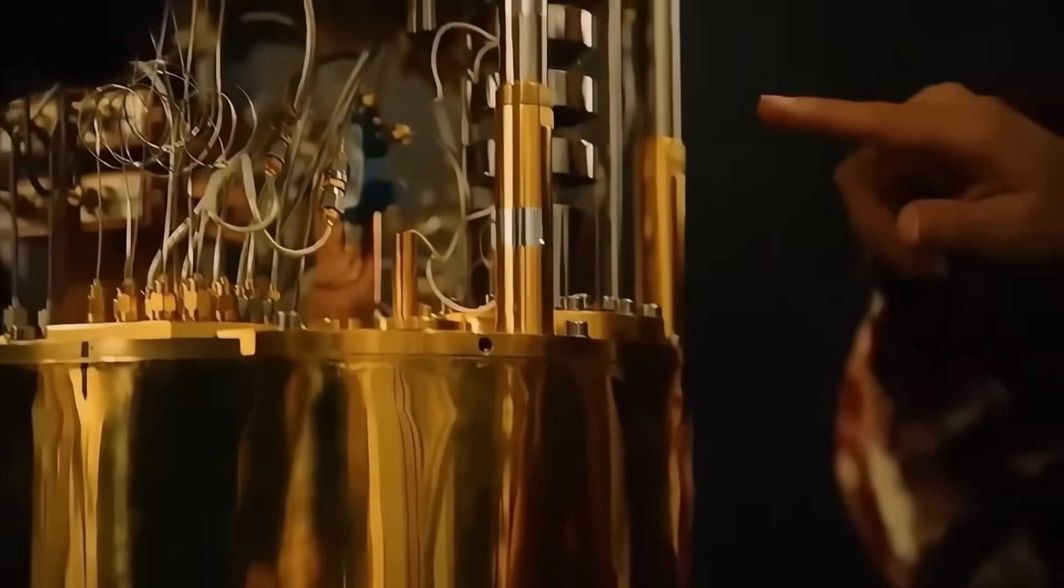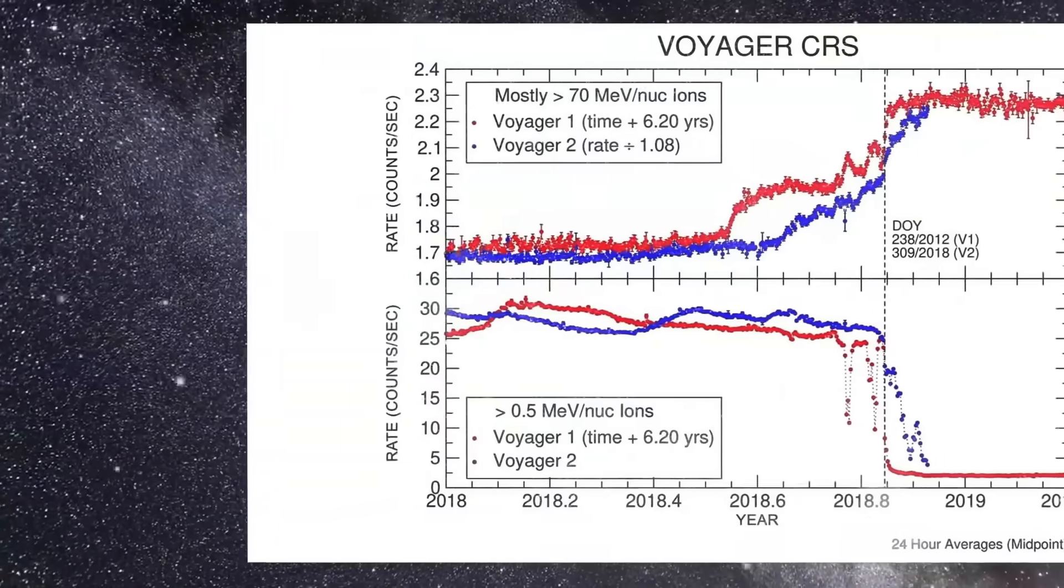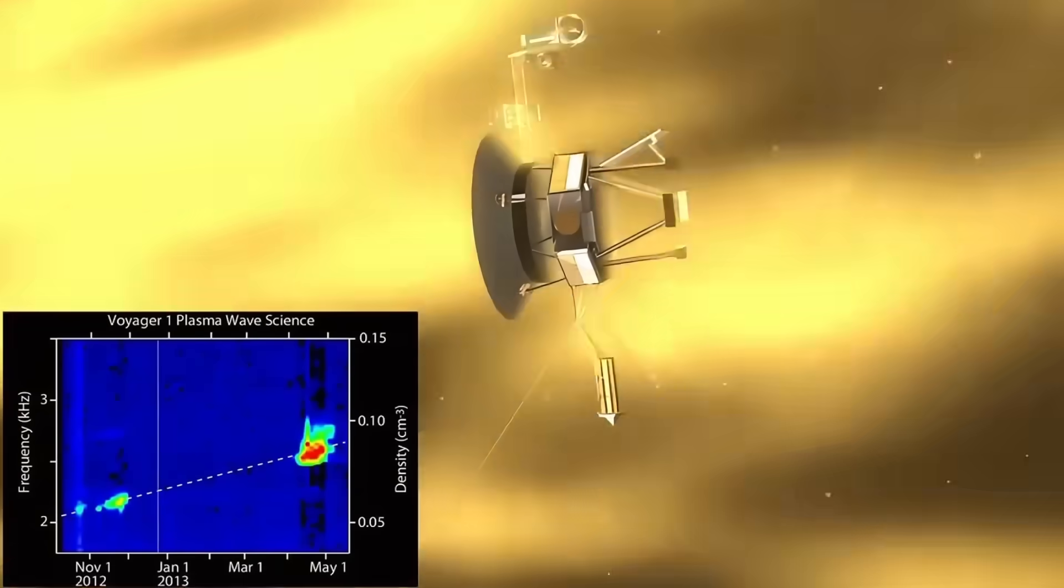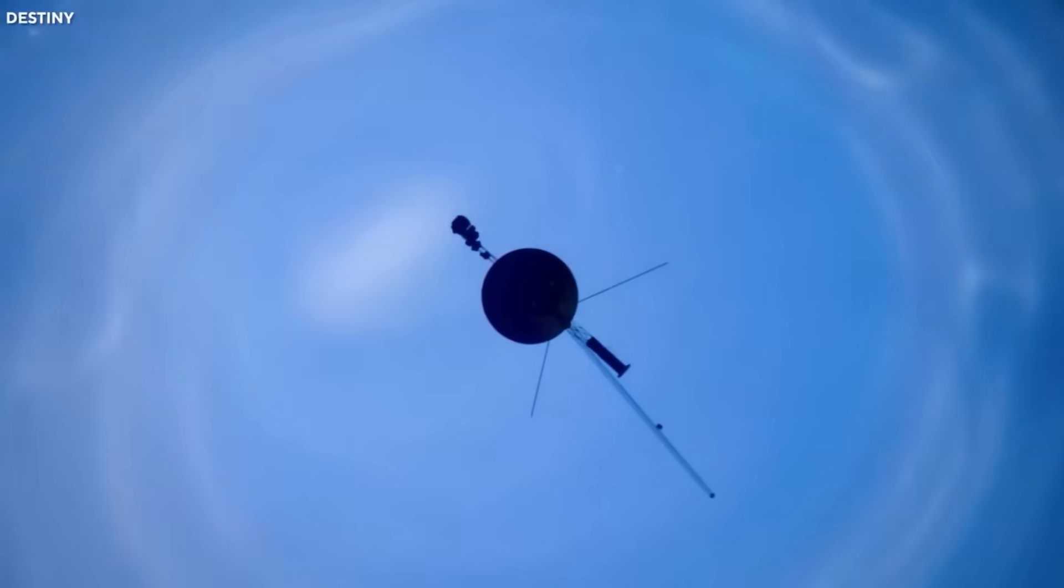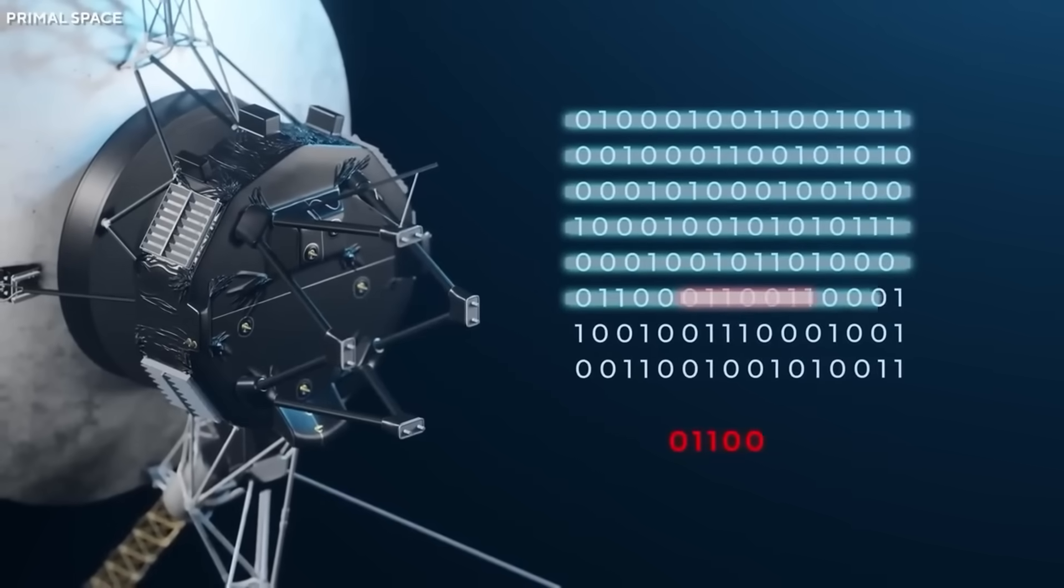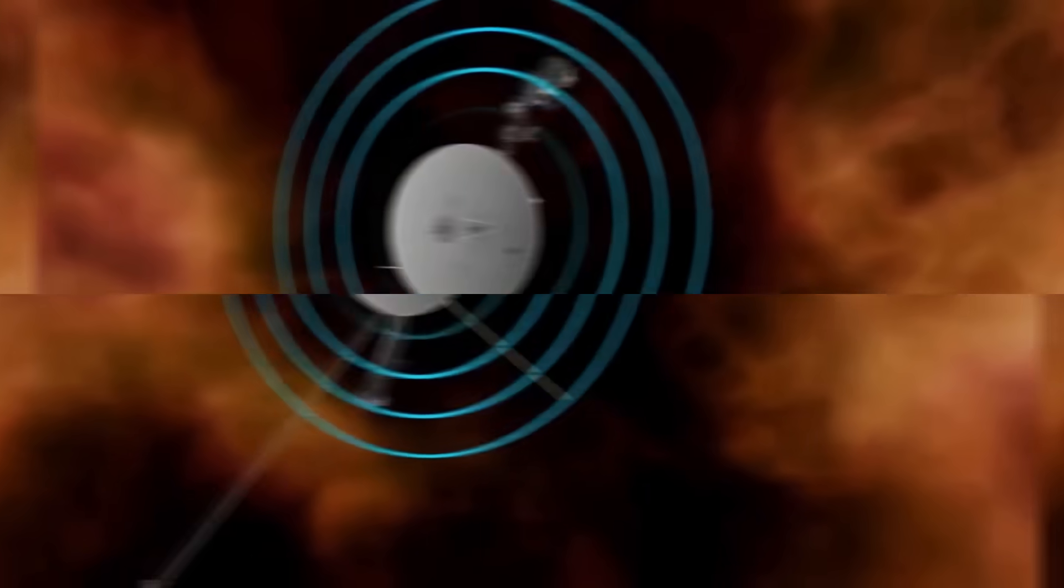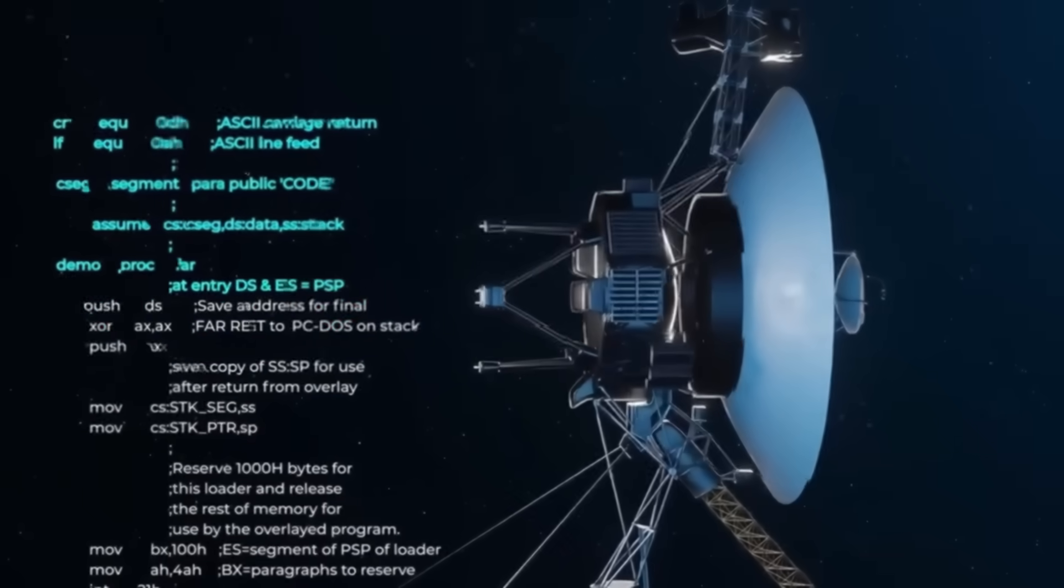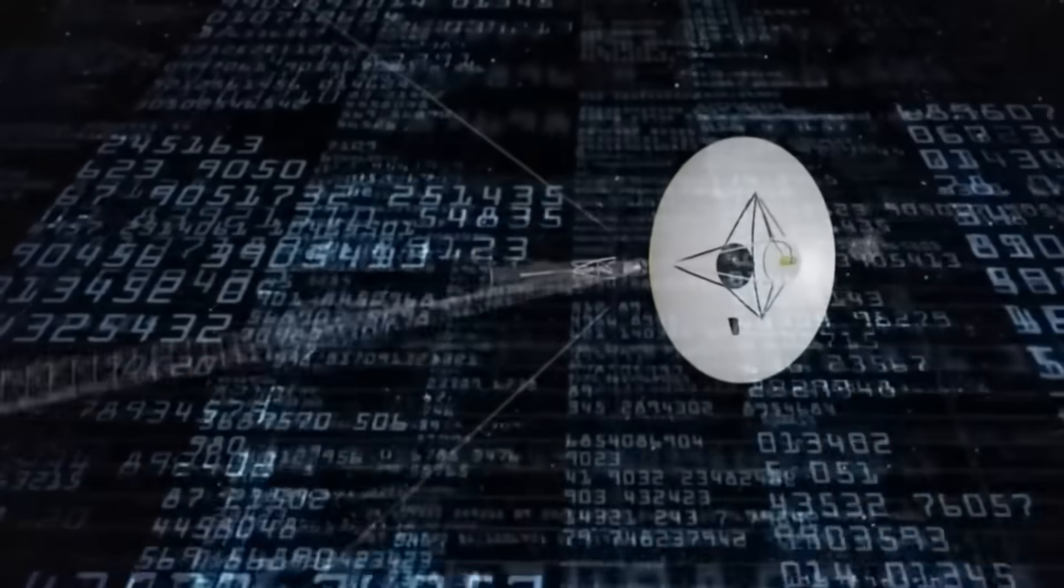Yes, a quantum chip analyzed Voyager's so-called gibberish data and uncovered something that looks less like noise and more like a hidden message. In late 2023, NASA's farthest spacecraft suddenly started transmitting corrupted data. Engineers called it a hardware failure, but what if it was something more? 15 billion miles from earth, this ancient explorer encountered something that changed how it communicates with us.